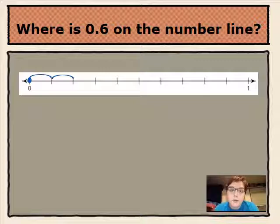Zero to the first tally mark is one tenth, two tenths, three tenths, four tenths, five tenths, and then our final number, which is six tenths.